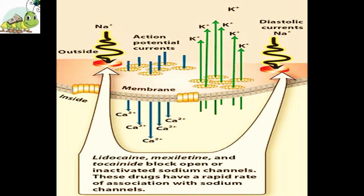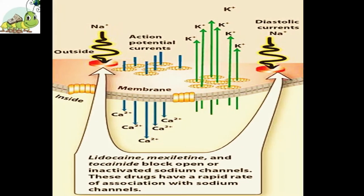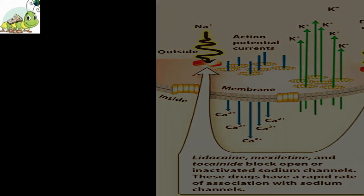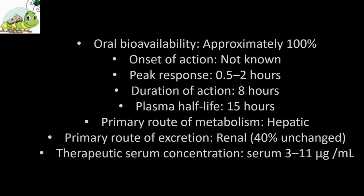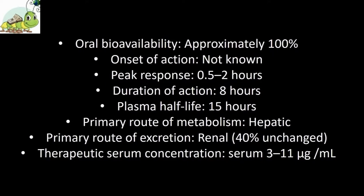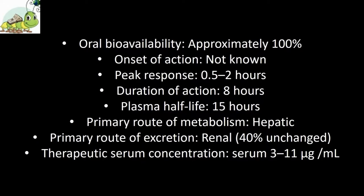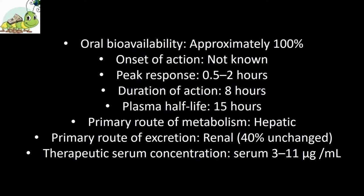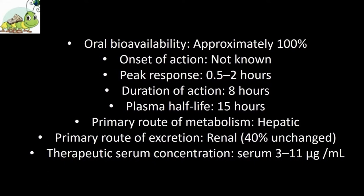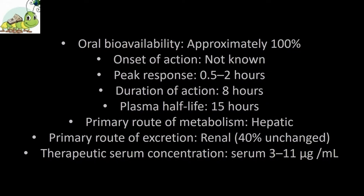Hemodynamic effects: The acute hemodynamic effects are slight and transient and are observed most often during or immediately after drug infusion. Pharmacokinetics: The pharmacokinetic characteristics of Tocainide — oral bioavailability: approximately 100%; onset of action: not known; peak response: 0.5 to 2 hours; duration of action: 8 hours; plasma half-life: 15 hours; primary route of metabolism: hepatic; primary route of excretion: renal 40%; therapeutic serum concentration: approximately 3 to 11 mcg per ml.